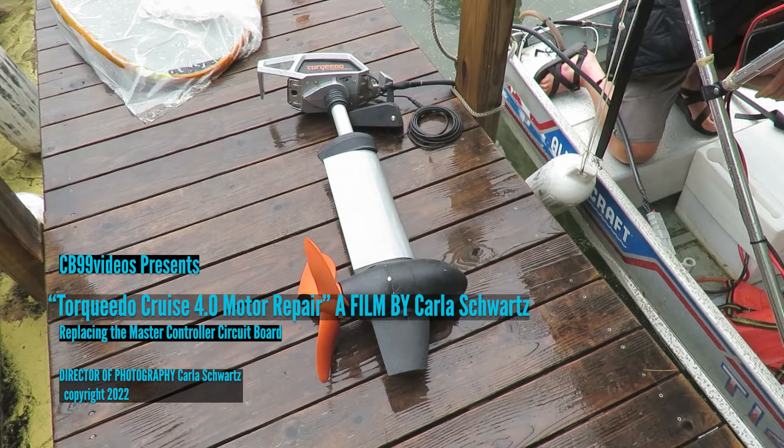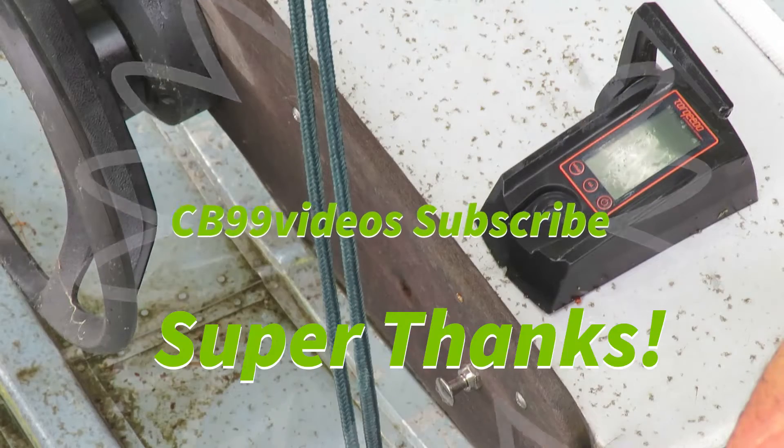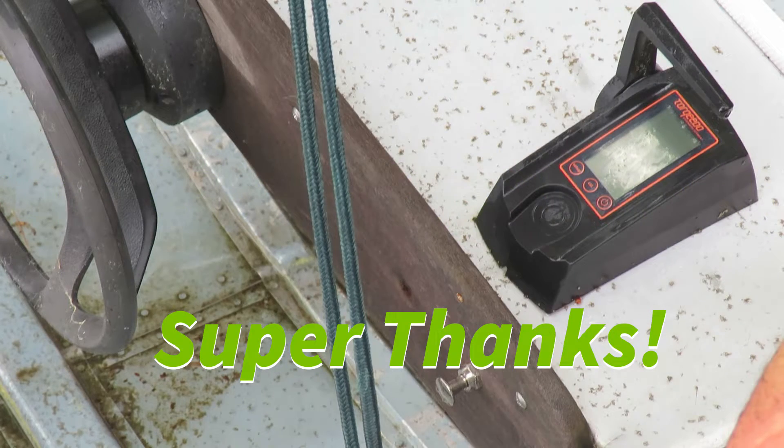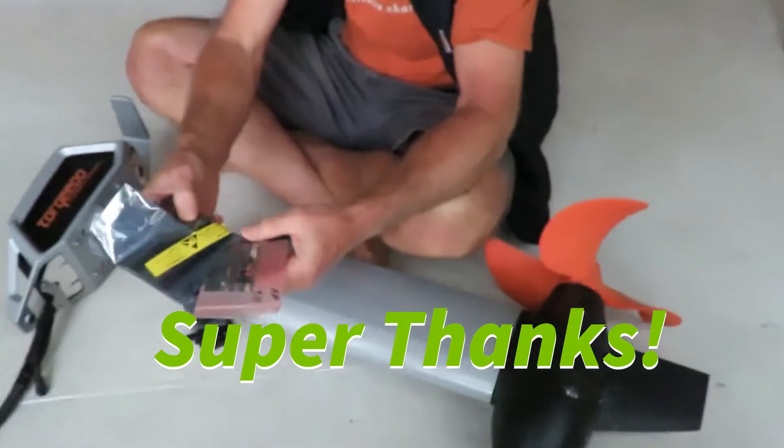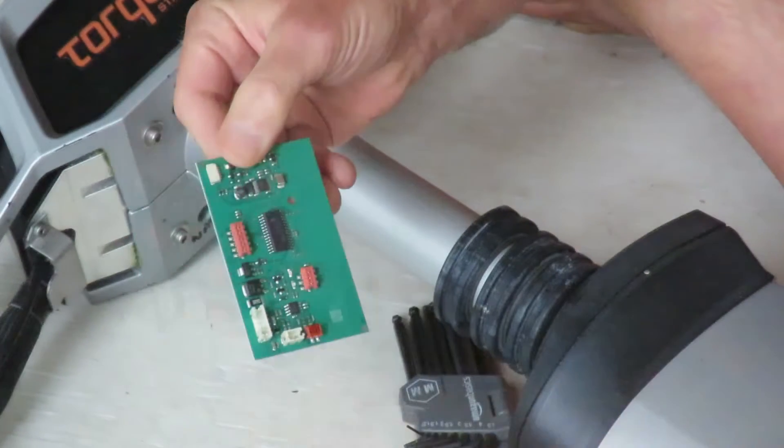We had a problem with our Torquedo Cruise 4.0 motor. The controller for the motor wouldn't power up. We bought two circuit boards, the only two that you can replace, but we're only going to replace one which is the master controller circuit board.